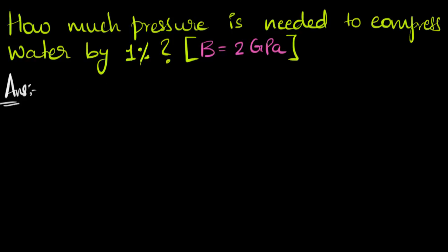Hooke's Law says that bulk stress is proportional to bulk strain. So bulk stress, which is just the pressure, is proportional to bulk strain. And bulk strain is defined as the change in volume per unit volume. So this is bulk strain. And the proportionality constant itself is the bulk modulus.